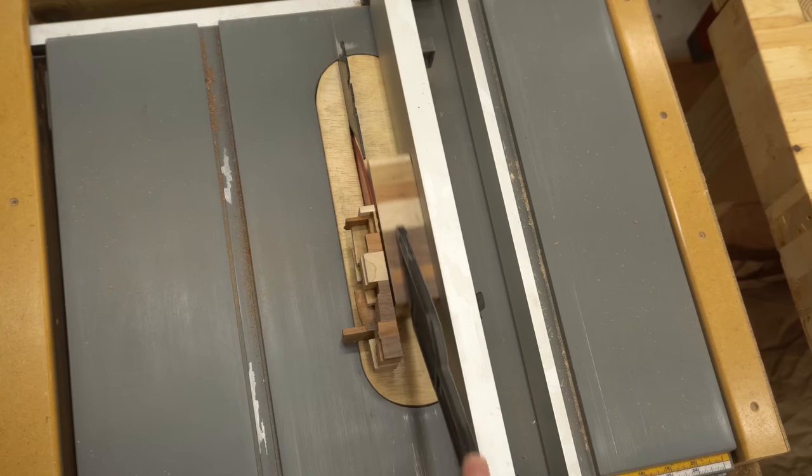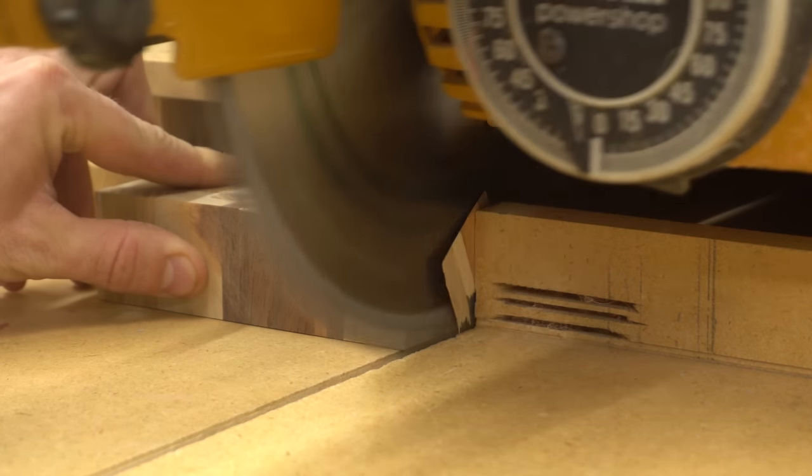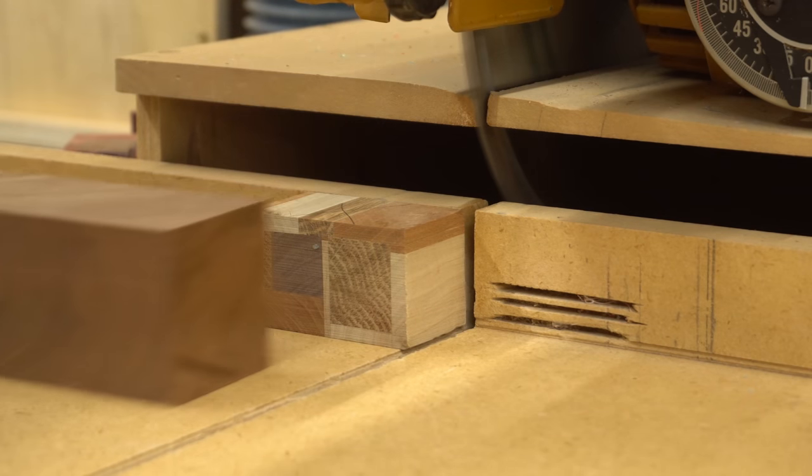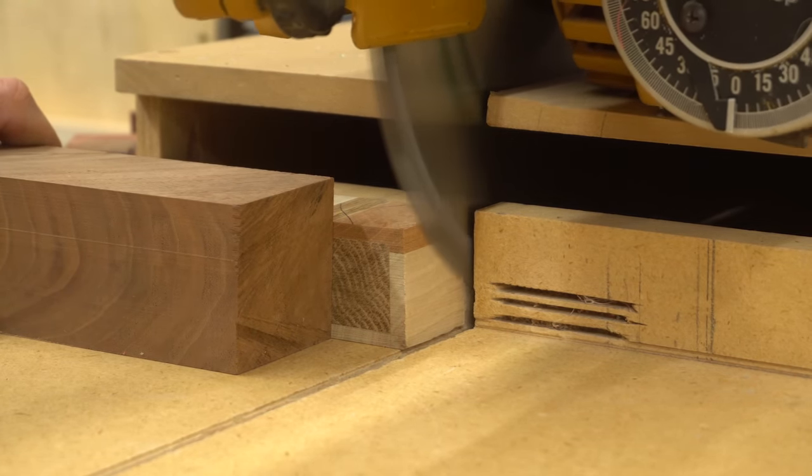After the glue dries, I cut the blanks so it's one and a half inches square, then I square the ends using my radial arm saw. On this shorter piece, my hands would be far too close to the blade, so I use a bigger block of wood to hold it against the fence while I cut it.